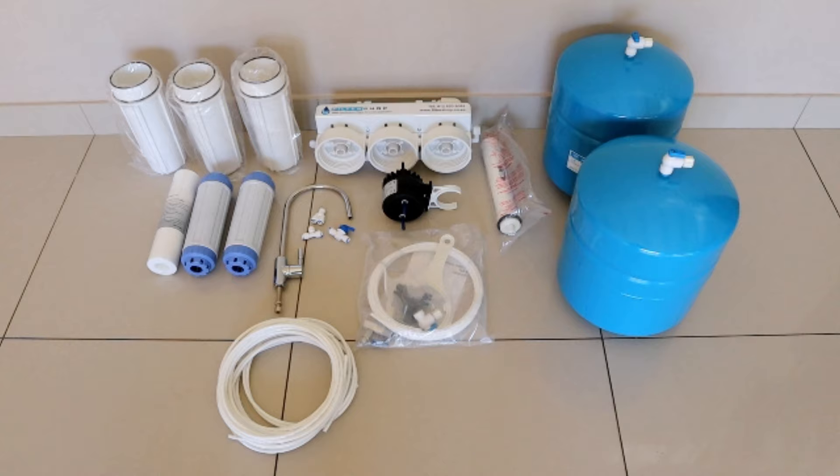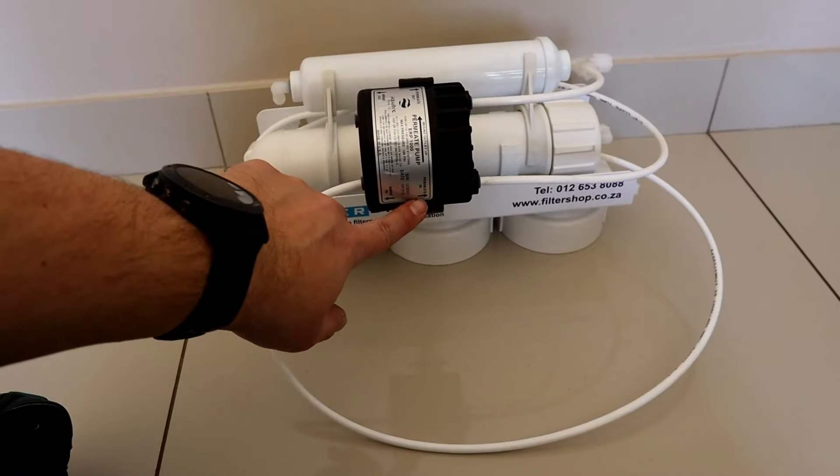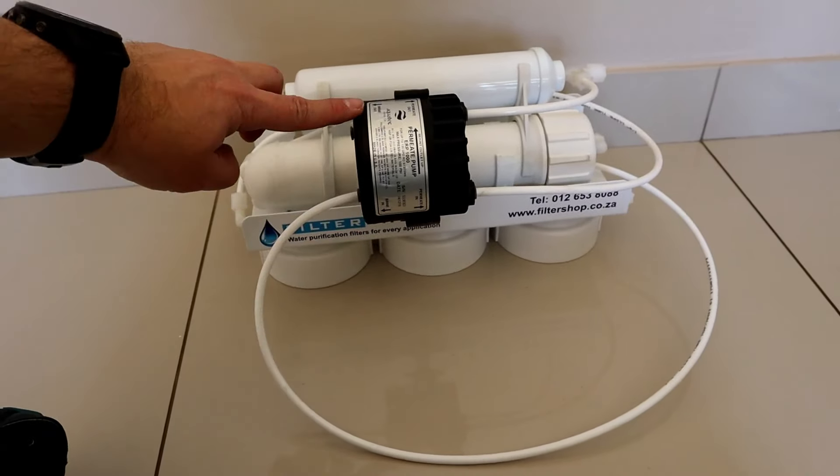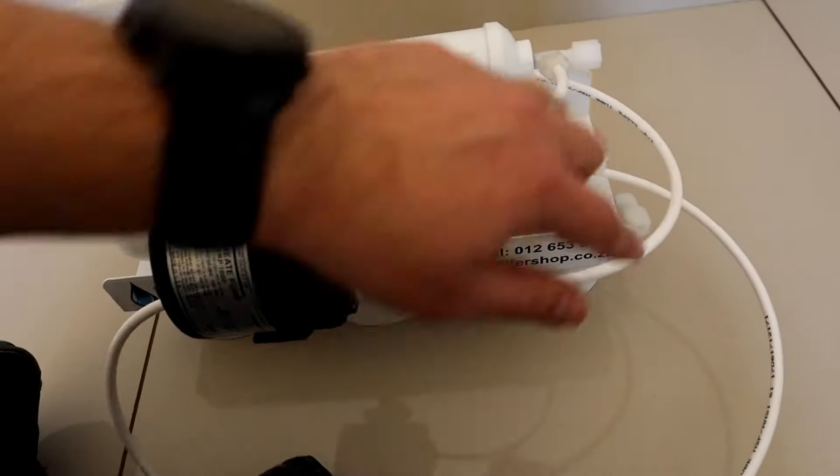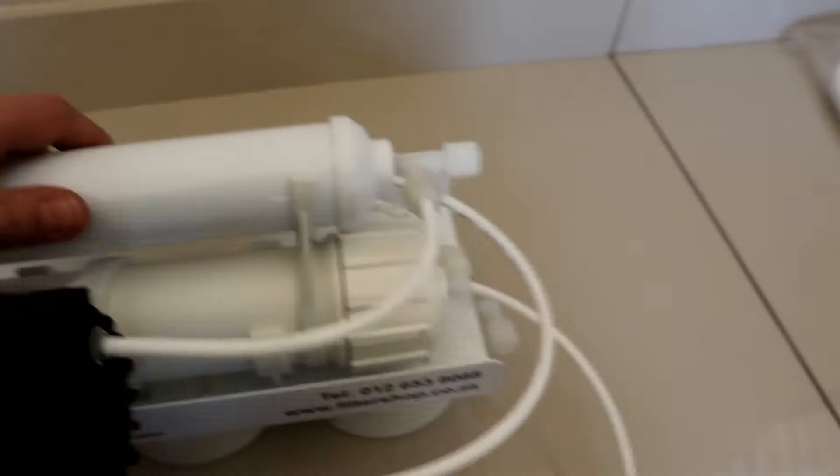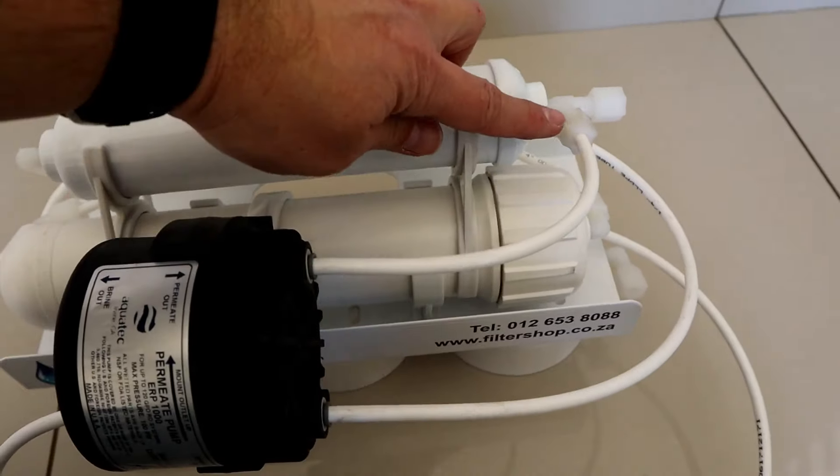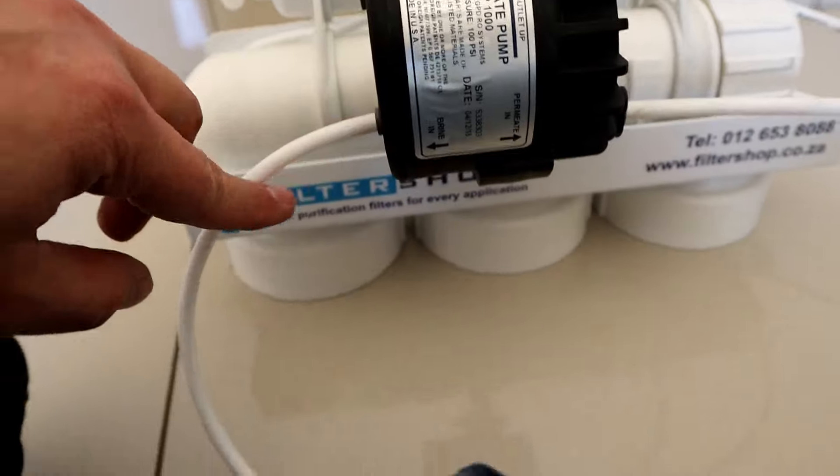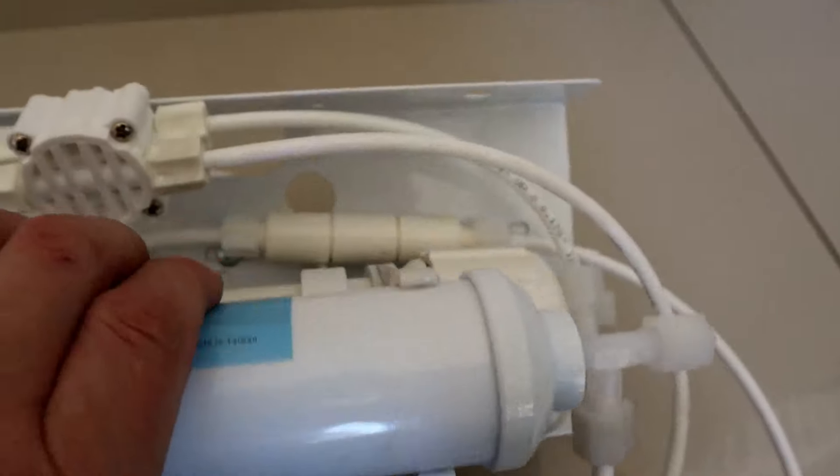And with an extra tank to have a much bigger buffer of water if we want to fill external bottles. First we install the permeate pump which gives the unit much better efficiency than the standard system, as well as giving you higher pressure in the storage tank and allowing you to store more water.